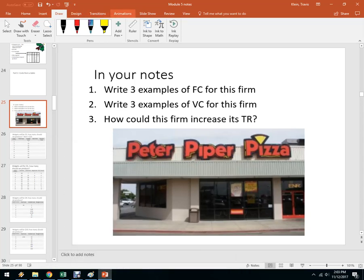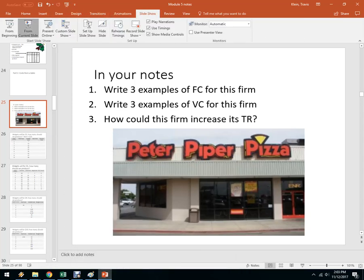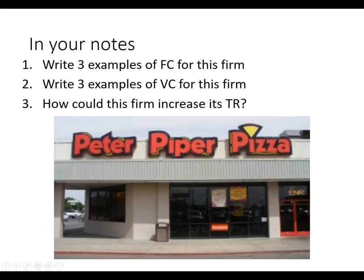Hello, let's do some examples from a table given some information. In the last video we learned the different types of costs. Here's a firm popular around southern Arizona — a Phoenix-based company before they got bought out by Chuck E. Cheese. In your notes, write down three examples of fixed costs, three examples of variable costs, and some ways the firm could increase its total revenue. Pause the video and do that, then I'll go over some answers.